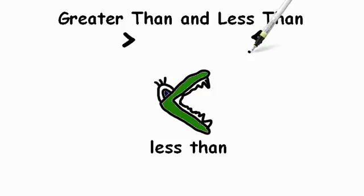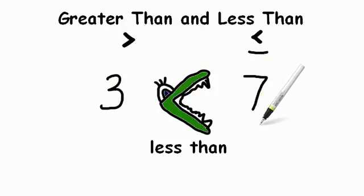It's the same symbol as this right here. Now if we have the number 3 and the number 7, once again the gator, the alligator is always eating the bigger number. So this sentence would be 3 is less than 7.